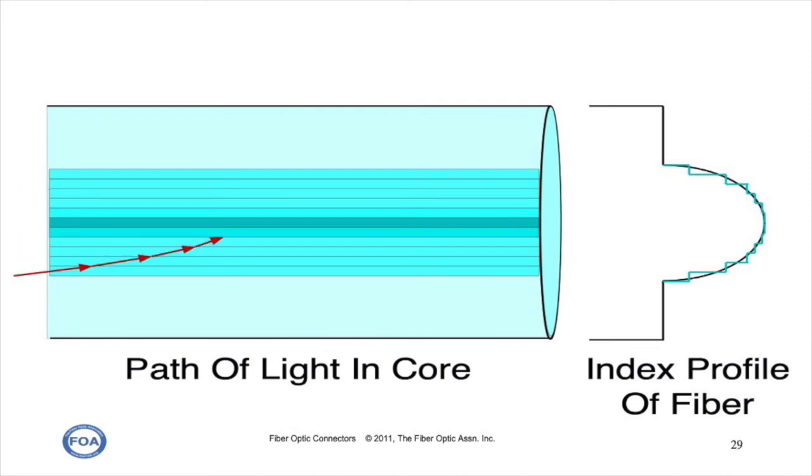As the light goes through the core and goes from layer to layer, it's bent toward the core on one side, away from the core on the other side, until the light follows essentially a sinusoidal path through the core of the fiber.